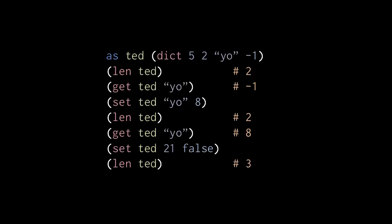Set ted 21 false is a new key-value pair, a key 21 with a value false. Lastly, len ted then returns 3 because the dictionary now has three key-value pairs.